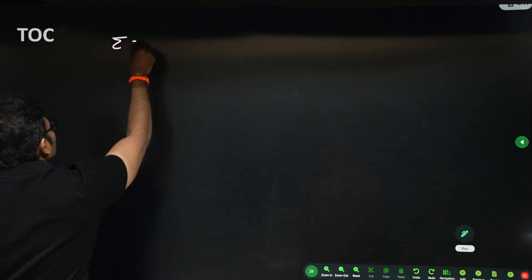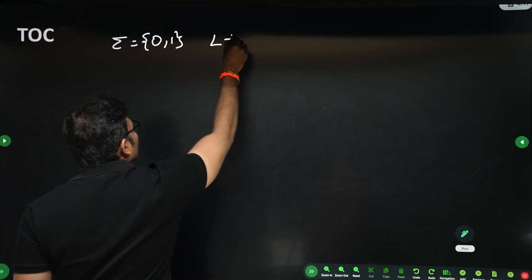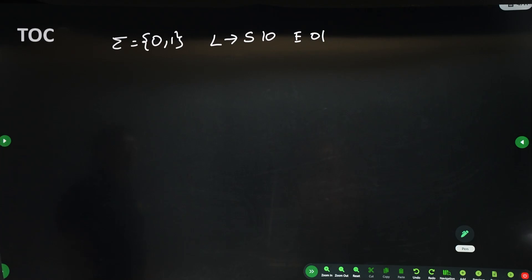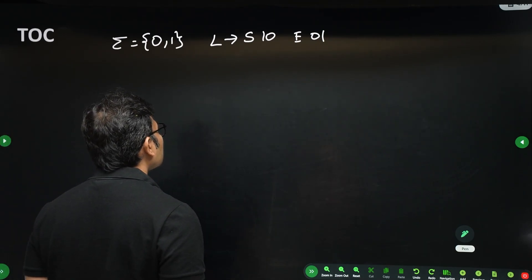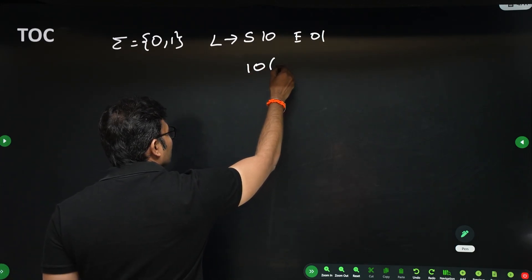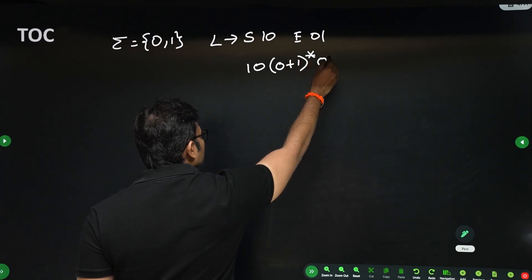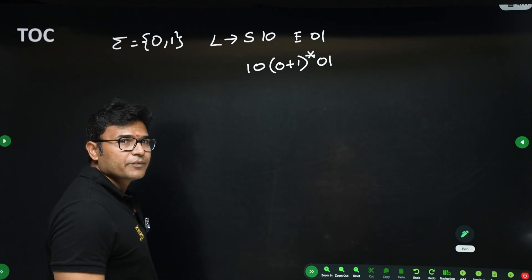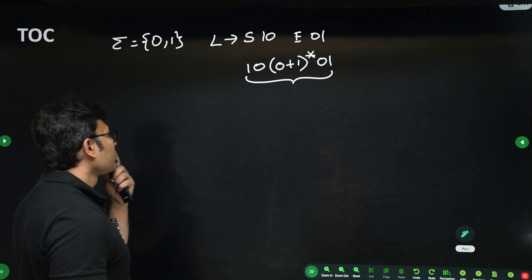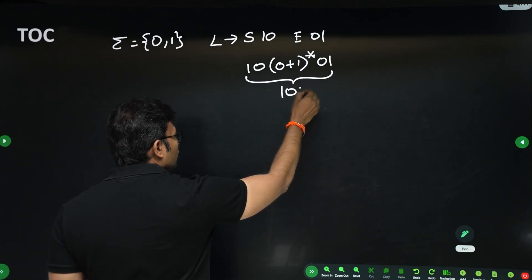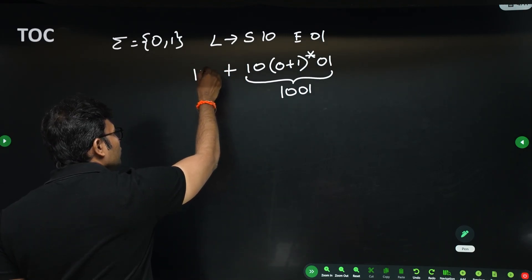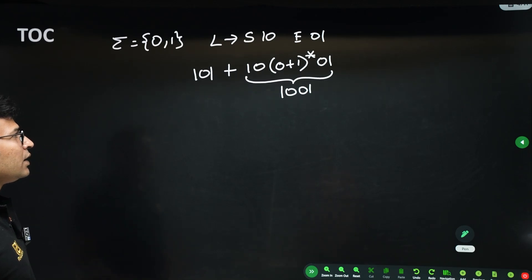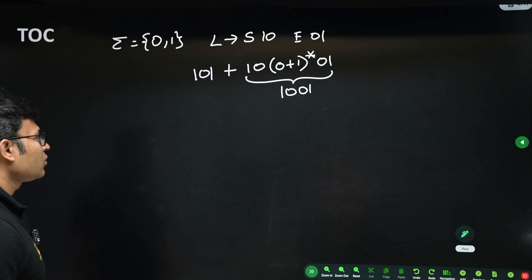Now a new question: sigma equals {0, 1}. The language is starting with '10' and ending with '01'. So the starting two symbols must be '10' and the ending two symbols must be '01'. Writing the regular expression directly: '10' then (zero or one)* then '01'. But there is a small problem — the minimal string generated is '1001', whereas in our language the minimal string is '101', starting with '10' and ending with '01'. Drawing an NFA directly is difficult, so let's do the minimal DFA first and then convert to NFA.